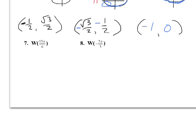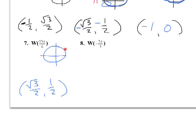Now let's try W(13π/6). The denominator is 6, so the coordinates involve √3/2 and 1/2. Counting around: 12π/6 equals 2π, so 13π/6 is just one step past a full revolution, landing us right back at the same spot as π/6. So the coordinates are (√3/2, 1/2). This confirms that W(13π/6) gives the same answer as W(π/6).